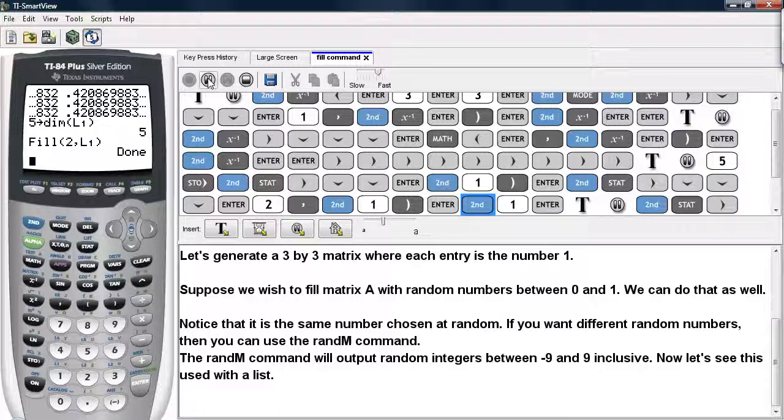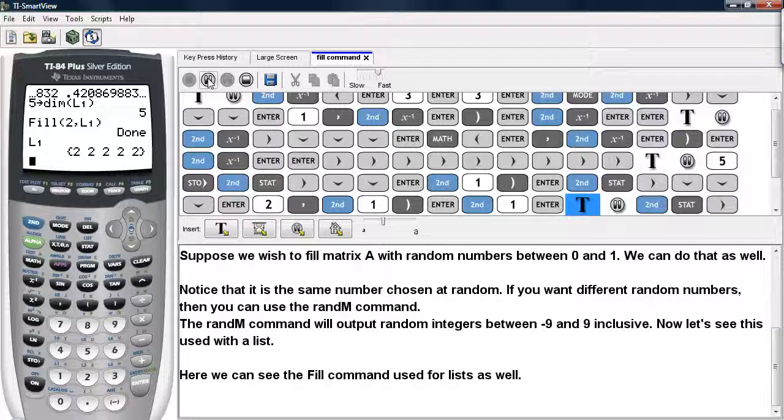And it says done, so then I call up list 1 to see it. And I have a list of 2s. So this is how you can use the Fill command with lists as well. Let's see another example.